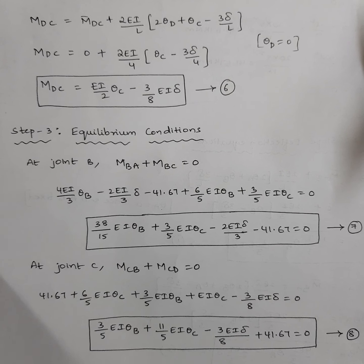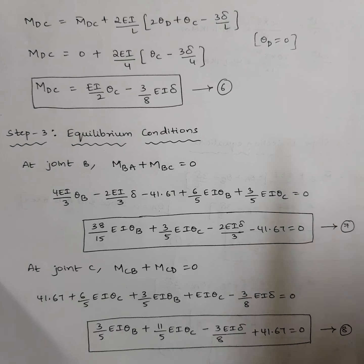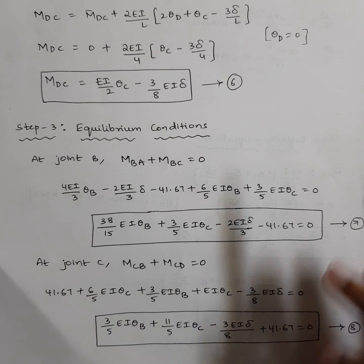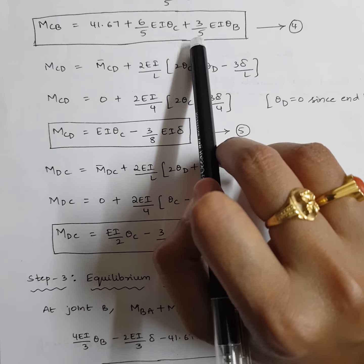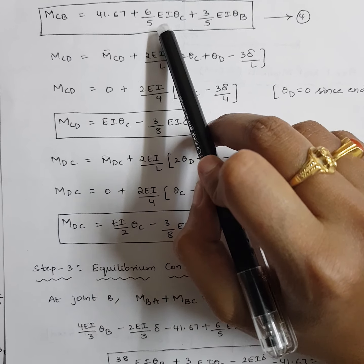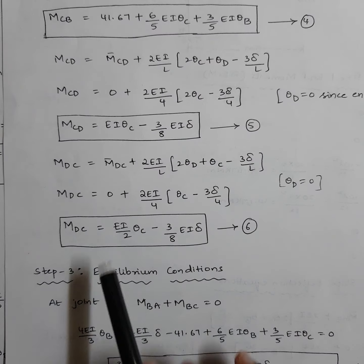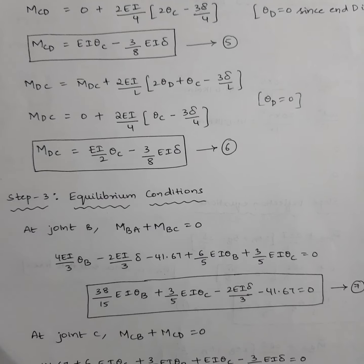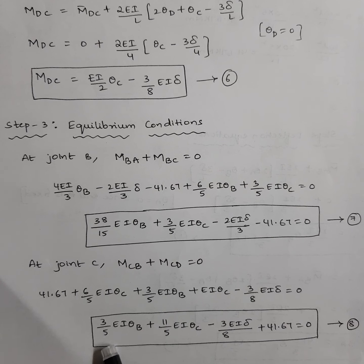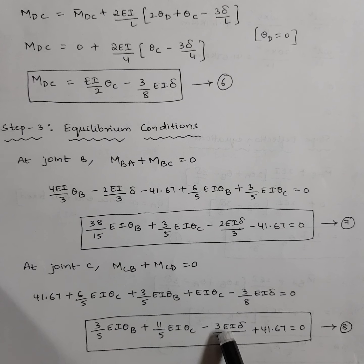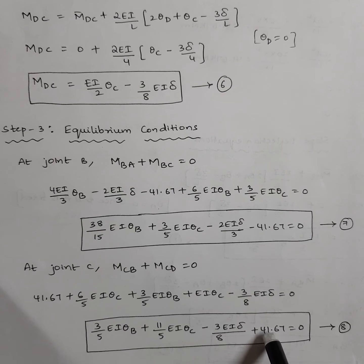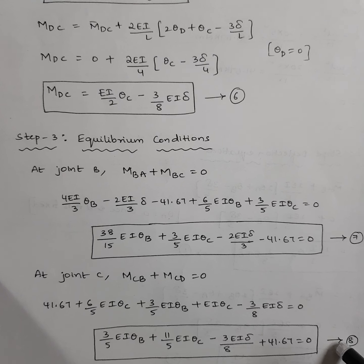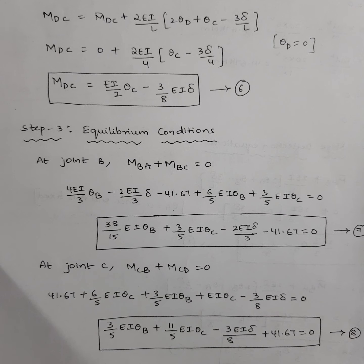Applying the joint condition at C: MCB + MCD = 0. Substituting equations 4 and 5 — MCB = 41.67 + (6/5)EI·θC + (3/5)EI·θB and MCD = EI·θC − (3/8)EI·δ — and simplifying gives: (3/5)EI·θB + (11/5)EI·θC − (3EI·delta)/8 + 41.67 = 0. This is equation number 8.